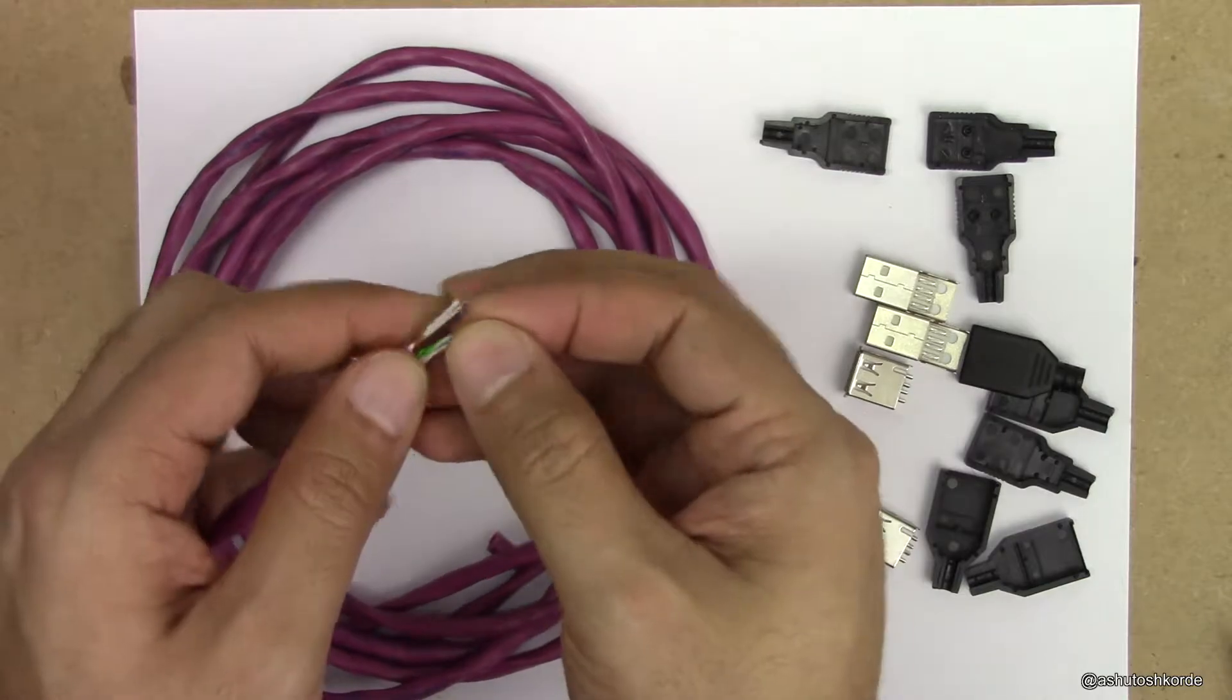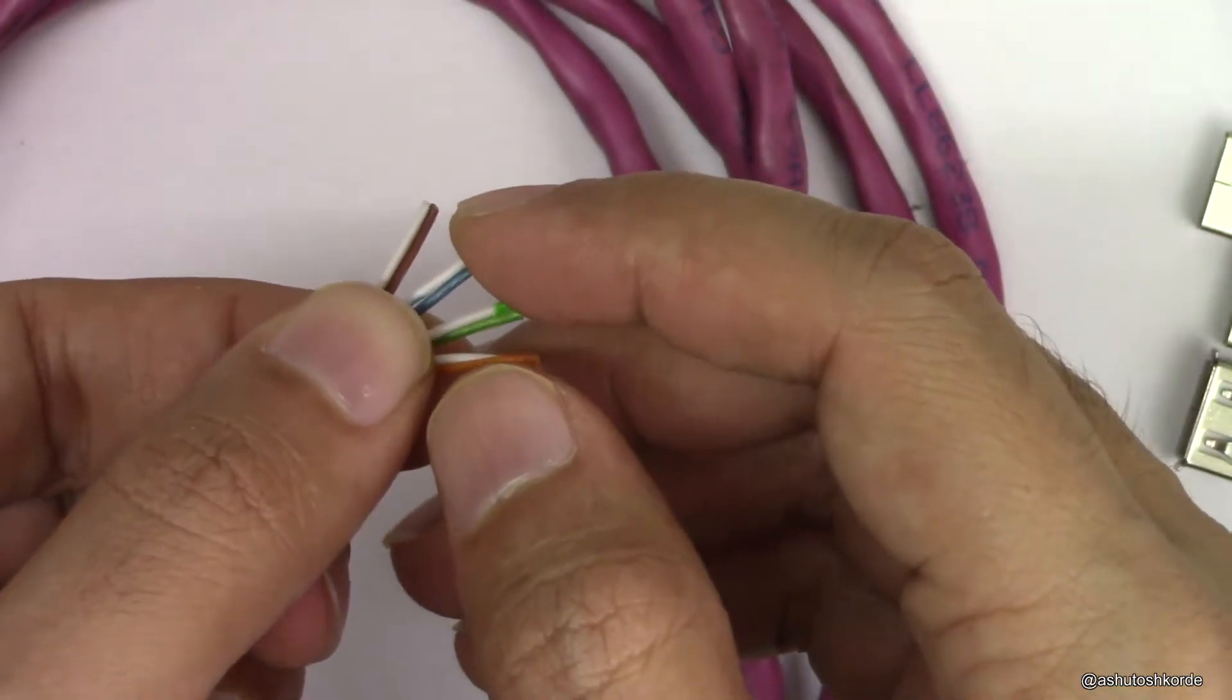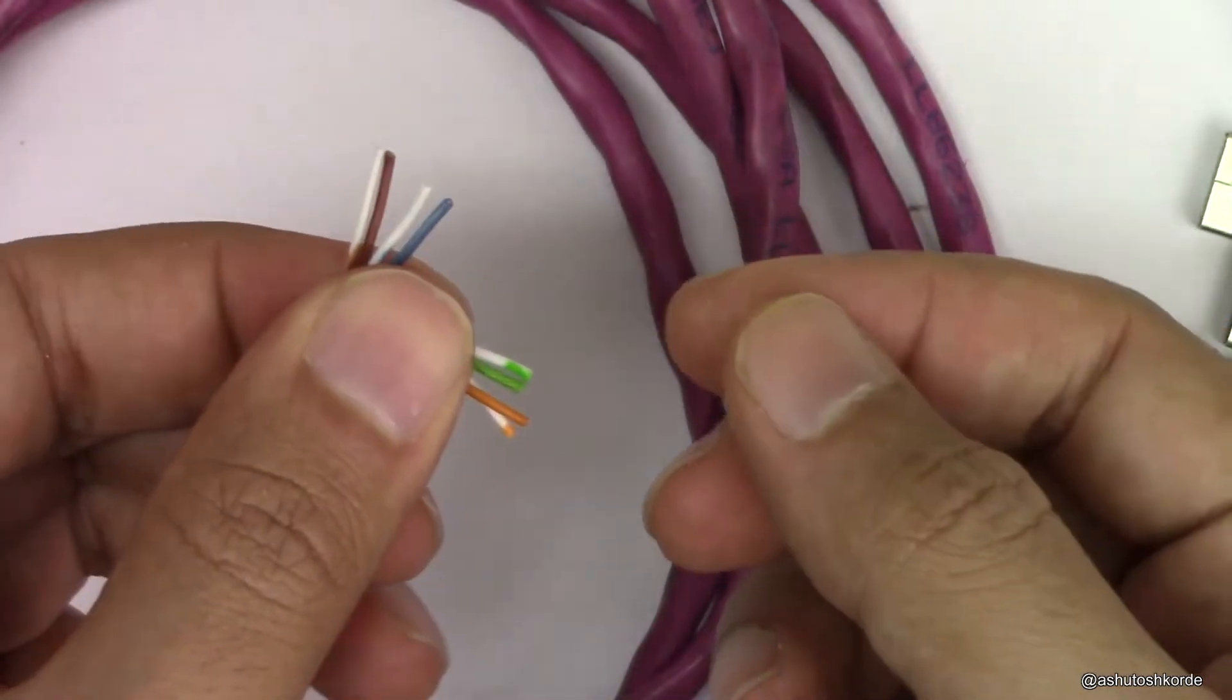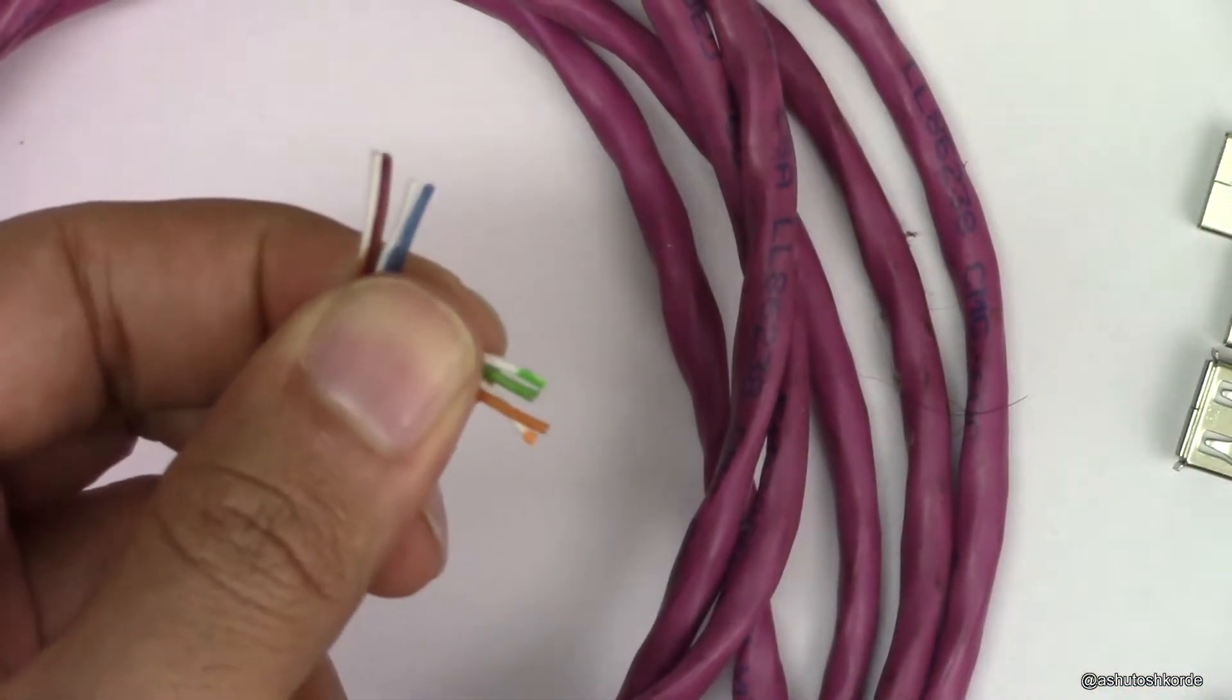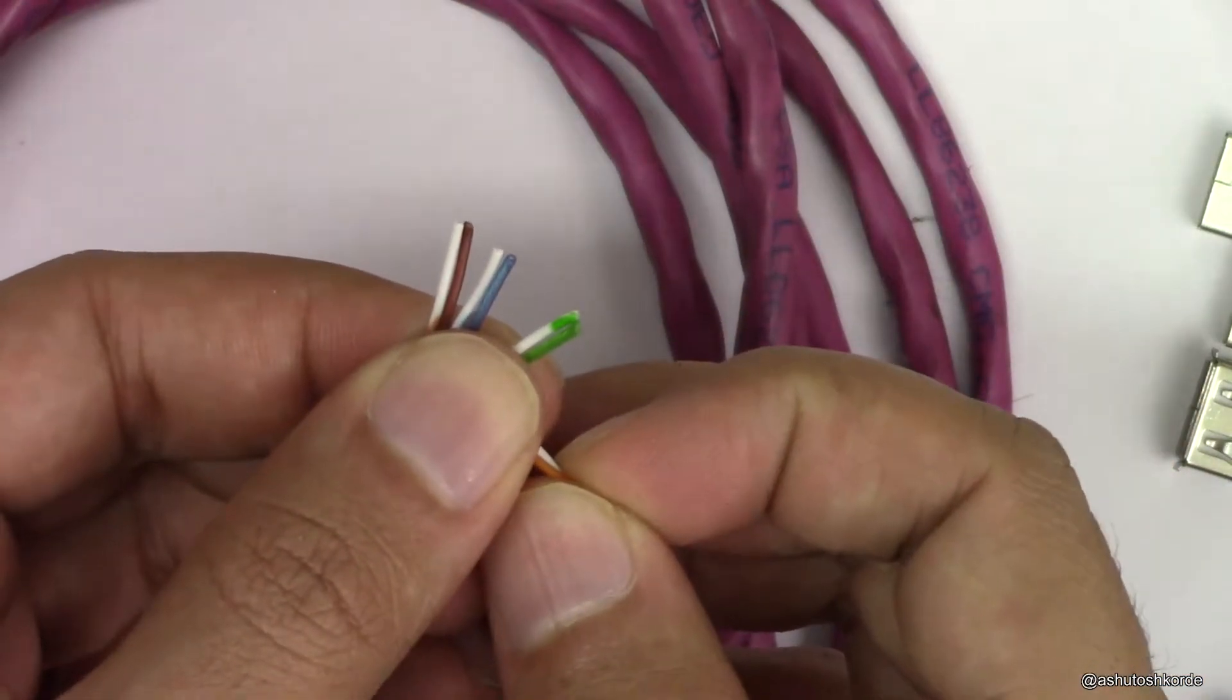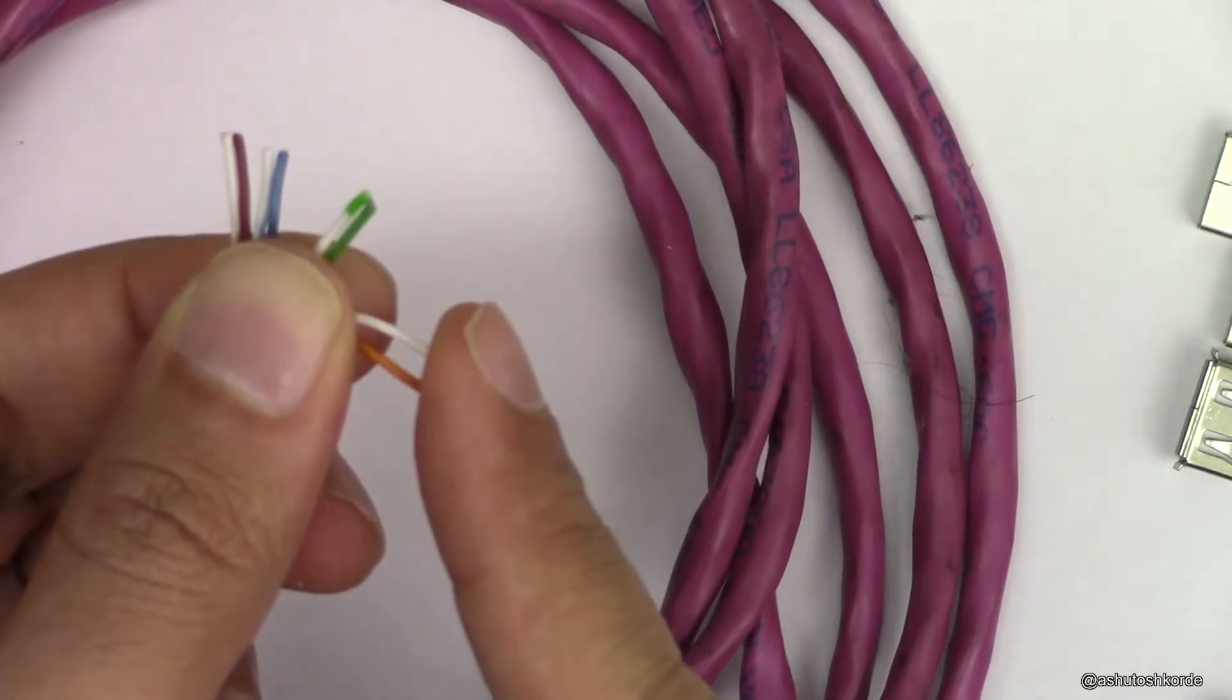So in this CAT5 cable we have four pairs of wires: one pair, two pair, three pair, and the fourth pair. What I'm going to do is use two of these for one of the USB connectors and the other two for another USB connector.